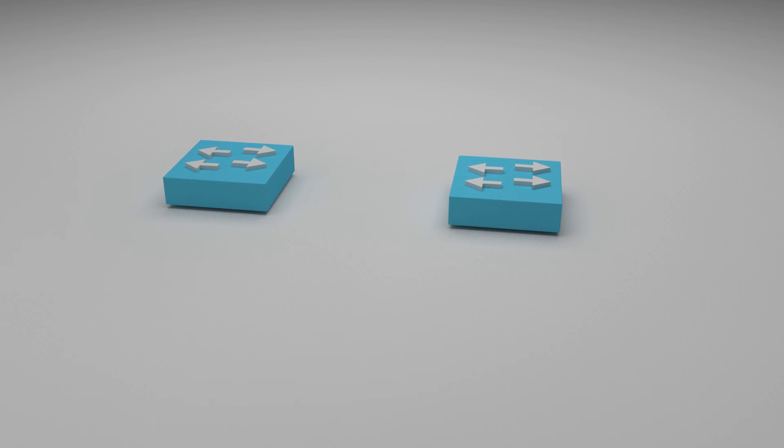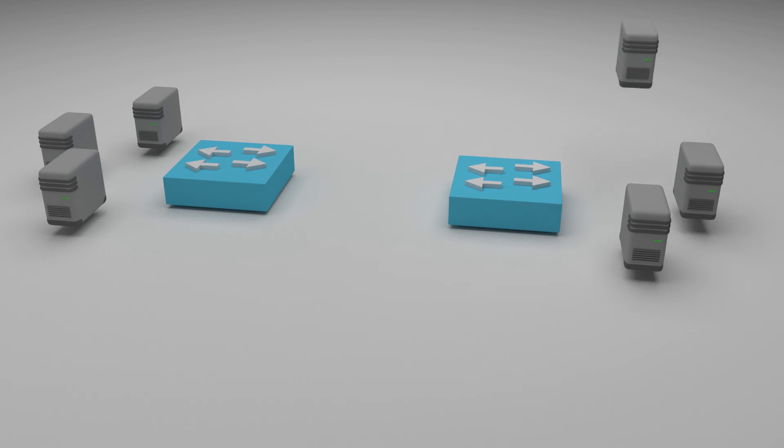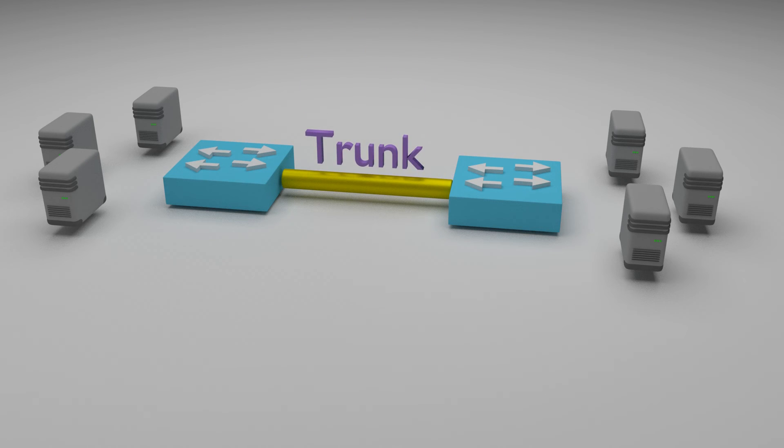But most environments aren't just a simple one switch topology. Most will have multiple switches and this means trunking so tagged traffic can pass from one switch to another. So the question before us is how does trunking work with private VLANs?